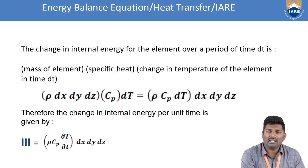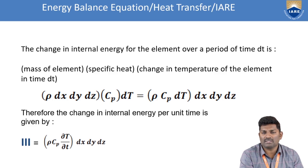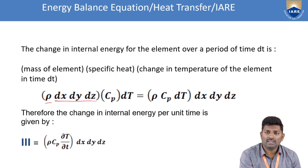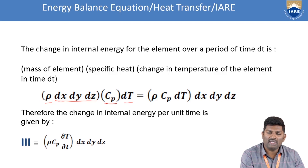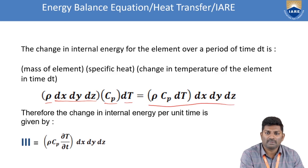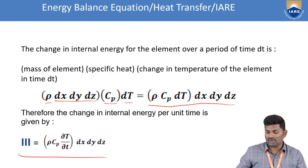The change in internal energy per unit time of the element is given by mass of the element into specific heat and the change in temperature with time dt. Mass of the element is given by density times volume — rho is the density, volume is dx dy dz, specific heat is cp, and change in temperature is dT. Rearranging these terms, you get rho cp dT into dx dy dz, which is the third equation: rho cp ∂T/∂t into dx dy dz.